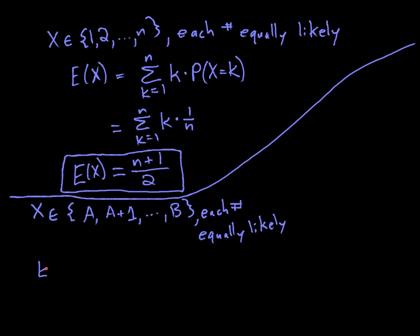Then the expectation is the sum from k equals A to B of k times the probability that X equals k. And that is the sum of k equals A to B of k times, let's see, how many numbers are there here?